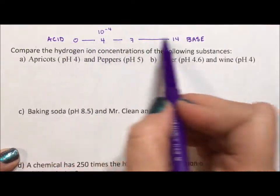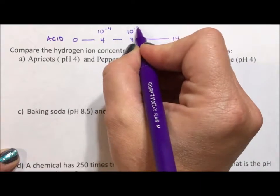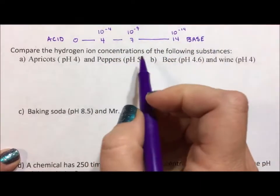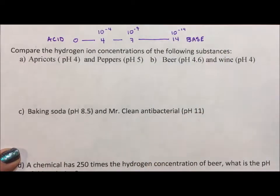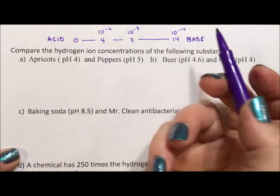Because the pH scale is based on this exponent, so 10 to the negative 7, 10 to the negative 14 of the hydrogen ion concentration of different substances, when we're comparing pHs we actually have to compare the exponents of 10.